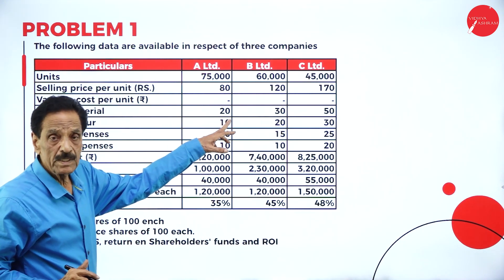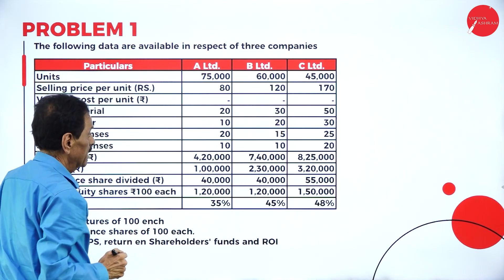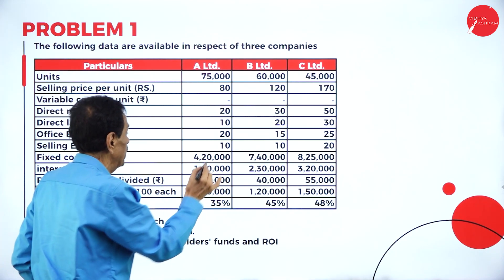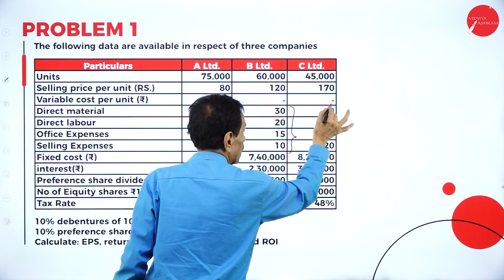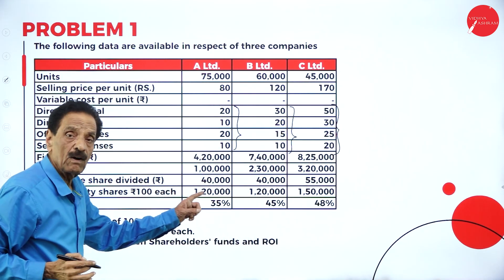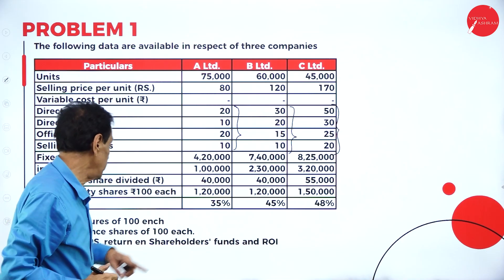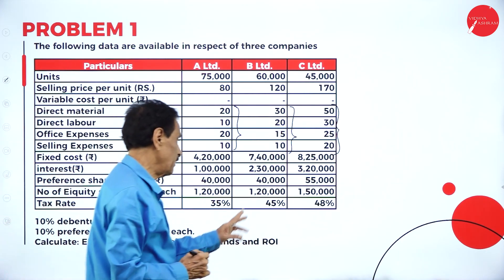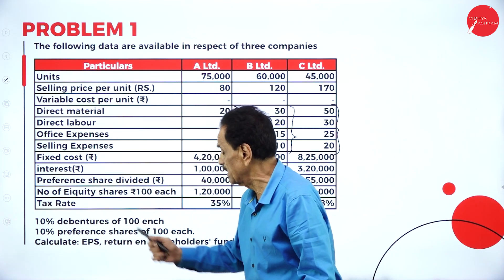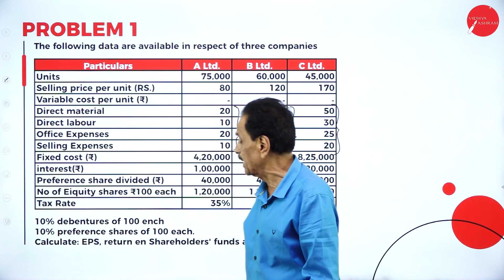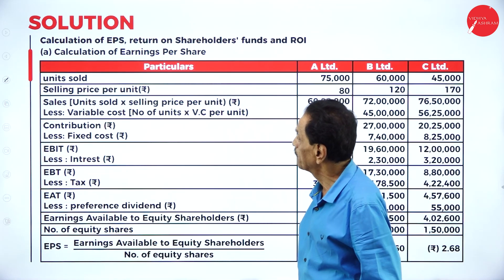Units sold: 75,000; 60,000; 45,000. Selling price per unit: 80, 120, 170. Variable cost per unit includes direct material, direct labor, office and selling expenses. Fixed cost is given, interest on debenture is given, preference dividend is given, tax percentage: 35, 45. Rate of interest on debenture: 10%. Rate of dividend on preference share is also given. We need to calculate earning per share, return on shareholders fund, and return on investment.